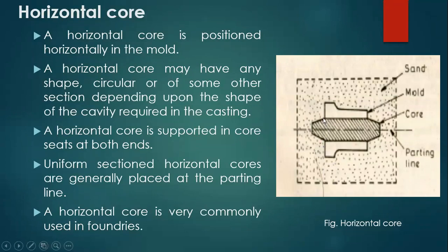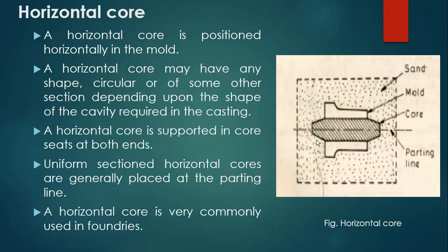Outside the mold cavity there is a trapezoidal portion on both the left side and the right side. Both ends of this core are supported by using a core seat, and that core seat is made by using a core print which is attached to the body of the pattern. During the ramming operation, the pattern is attached to the core print.